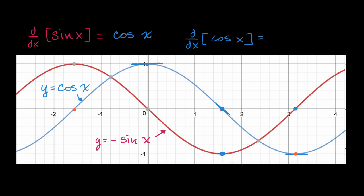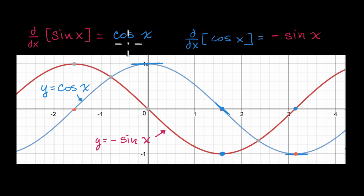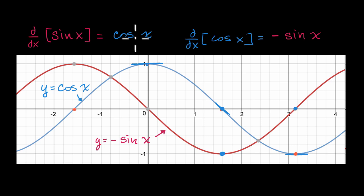So it actually turns out that the derivative of cosine of x is negative sine of x. These are really good to know — these are fundamental trigonometric derivatives. We'll be able to derive other things from them. Hopefully this video gives you a good intuitive sense of why this is true, and in future videos we will prove it rigorously.